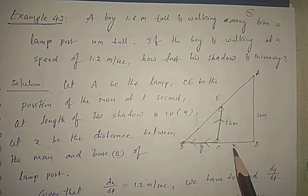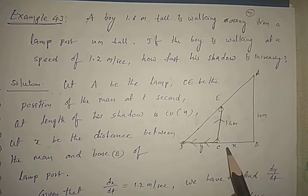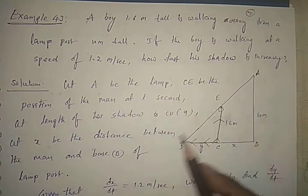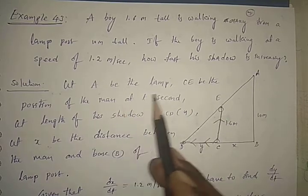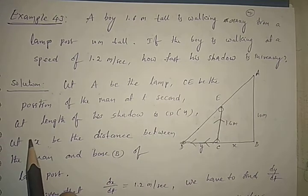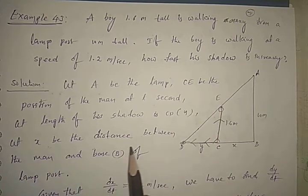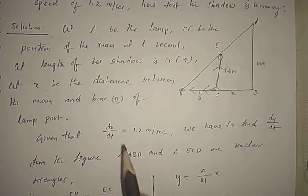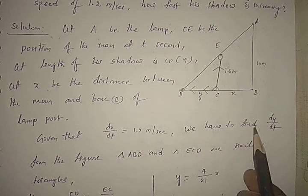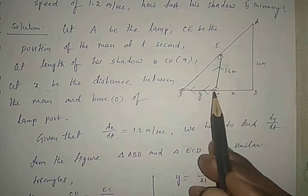In this problem, the rate of change in X is given and we have to find the rate of change in Y — the rate of change in the shadow. Let A be the lamp, C and E be the position of the man at T seconds, and let the length of the shadow CD be Y. Given that dx/dt = 1.2 meters per second, we have to find dy/dt.